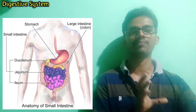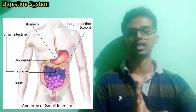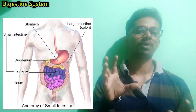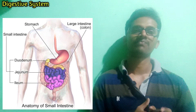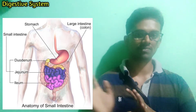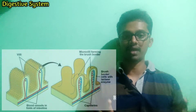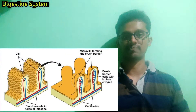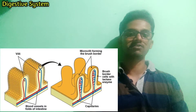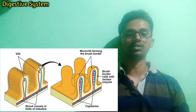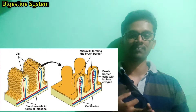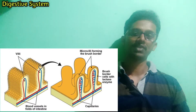The Ileocecal valve is present between the Ileum and the cecum. The cecum is part of the large intestine. So the Ileocecal valve connects the small intestine to the large intestine, allowing food to pass through in one direction. The small intestine is specialized for absorption, and this is due to the presence of microvilli. The nutrients — carbohydrates, fat, and protein — are all broken down and absorbed here.